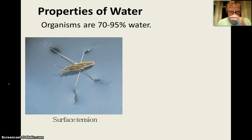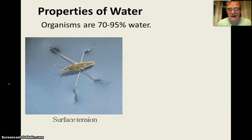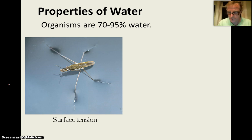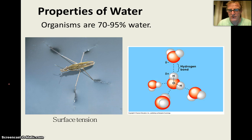This is a good example of another characteristic of water. You can notice that a water strider is standing on water as if the water is a solid. That's because of a property called surface tension. Surface tension is due to the cohesiveness of water, which just means its ability to stick together.